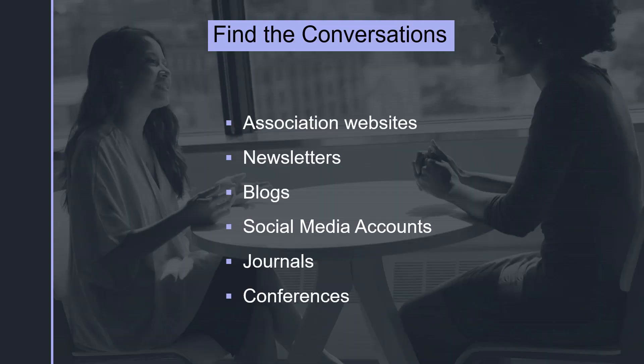So where do these conversations happen that contribute to potential research in discipline areas? This list provides some ideas of where professionals share ideas, research, and ask important questions. Professionals may join their national associations to work together and develop research in their discipline. Examples might be the American Dental Association or the National Association of Realtors. In addition, you may find conversations and potential research ideas in newsletters, blogs, social media posts, discipline-specific journals, and proceedings from yearly conferences.